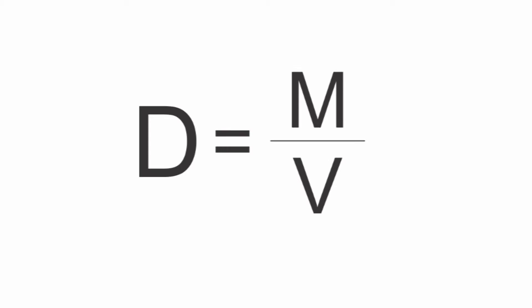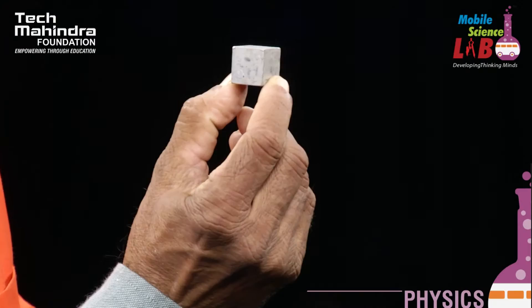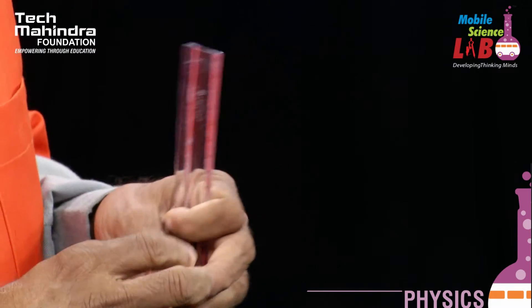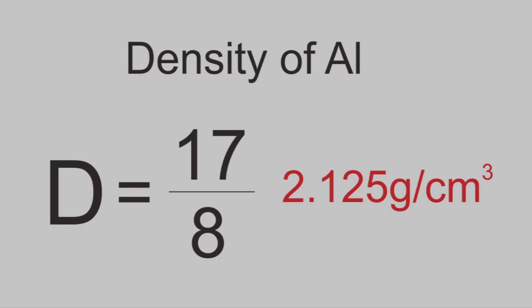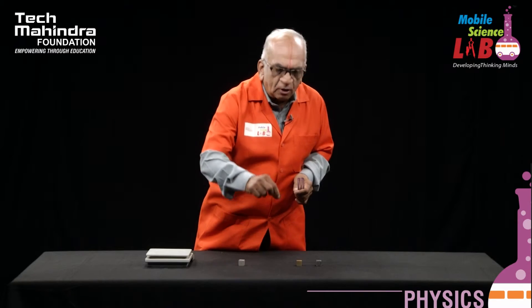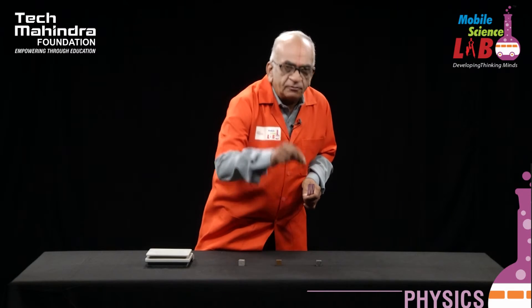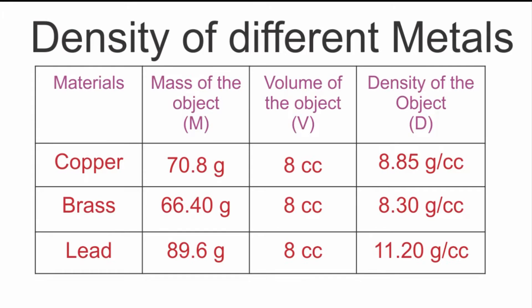The volume is 8 centimeter cube. Now, density equals m by v. Mass of the aluminum cuboid is 17 grams and the volume is 8 cc. When you divide one by the other, 17 divided by 8 turns out to be 2.1 — this is the density. In the same way, we can measure the density of the copper cuboid, brass cuboid, and lead cuboid.